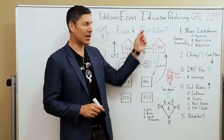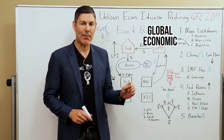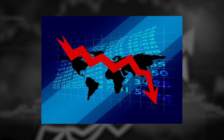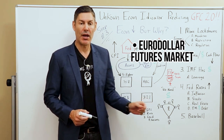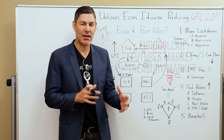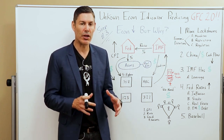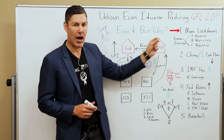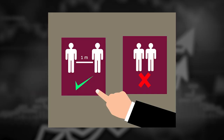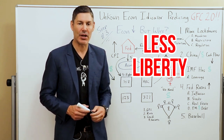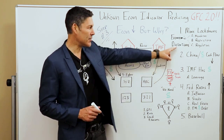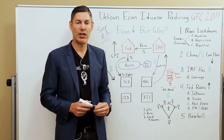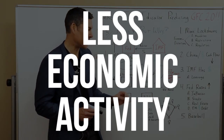Step number three. We know these economic indicators are predicting that global economic activity is going to decline — but why? Why is economic output going to go down so dramatically? The first thing these two indicators are telling us is that global governments are going to have more lockdowns, more mandates, more restrictions, and more regulation. That means less freedom, less liberty, and far less free market capitalism — which means government-created economic distortions. When you have the government creating this level of economic distortions, the only thing you should expect is less economic activity.